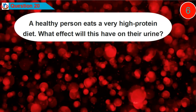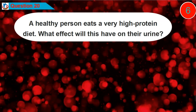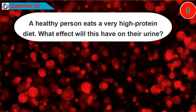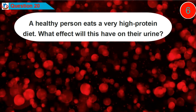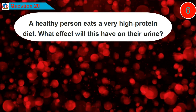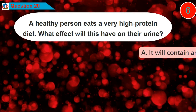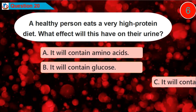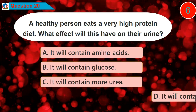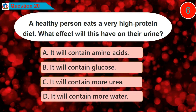Question 20. A healthy person eats a very high protein diet. What effect will this have on their urine? Is it option A, B, C, or D?